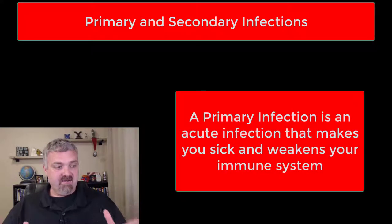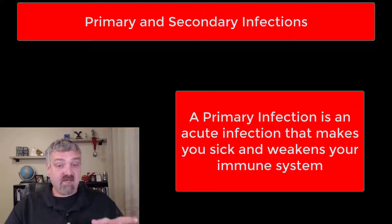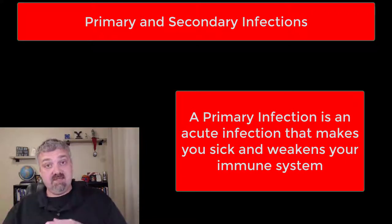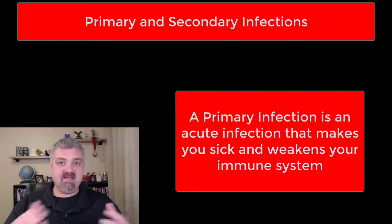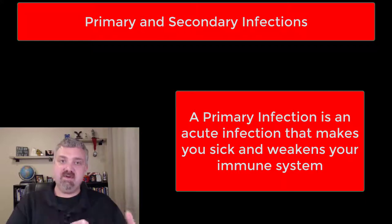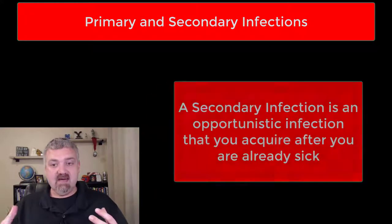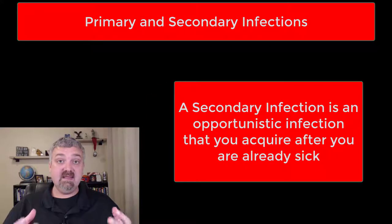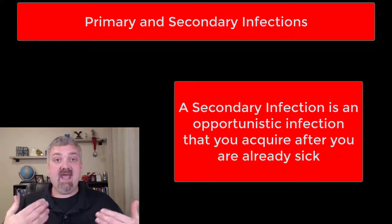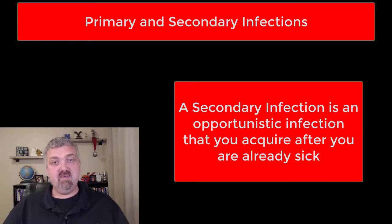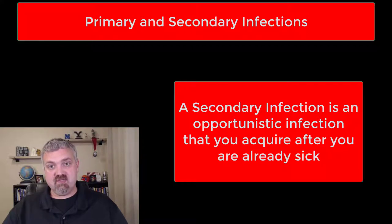A primary infection is an acute infection that you get that makes you sick. Primary, in this situation, means the first infection that you get. A secondary infection, like the name implies, is an infection you get after you're already sick, and these would be called opportunistic infections.